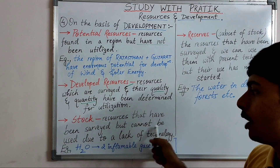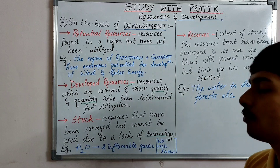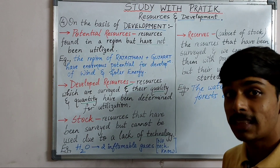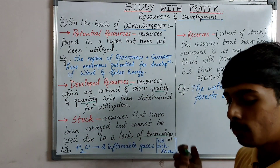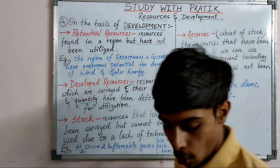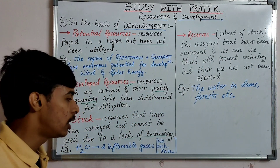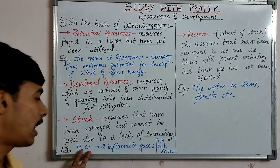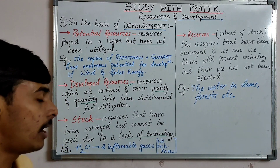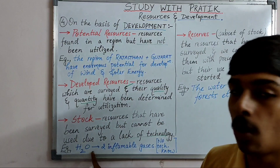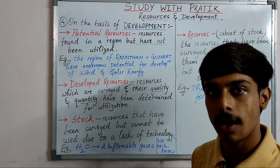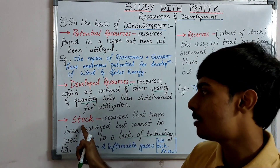Stock refers to resources that have been surveyed but cannot be used due to lack of technology — we don't have sufficient modern science or technology to use them. The best example is water (H2O): hydrogen and oxygen are two flammable gases, and if we could break H and O apart to produce energy, we would — but we don't have that technology yet, so it comes under stock.